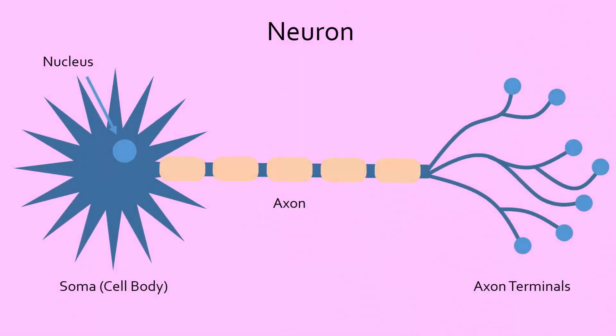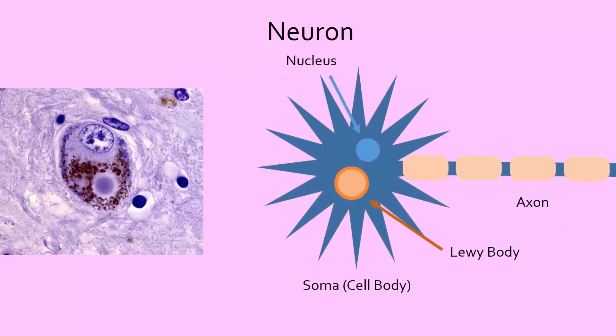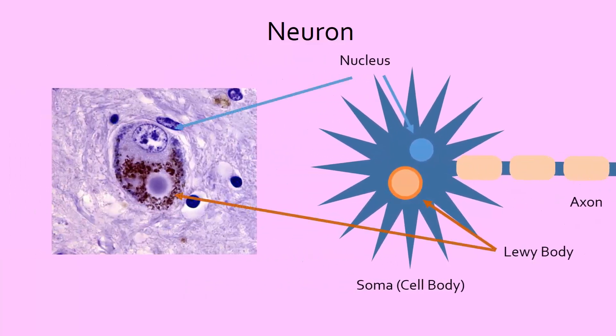Scientists don't really know why these neurons die out, but brain autopsies show that within those neurons, there are clumps of proteins called Lewy bodies. Are these Lewy bodies deadly to neurons, or are they simply a result of some other unknown source of damage? Research is still going on to determine their function.